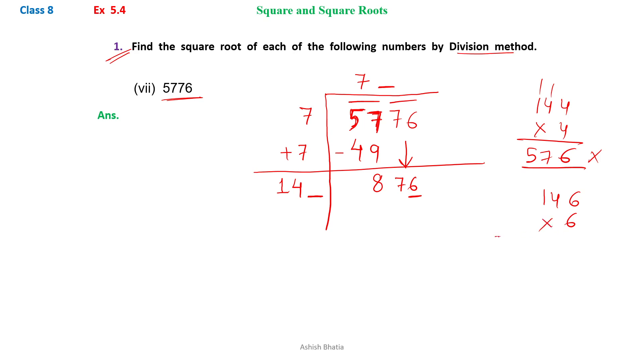Because 6 sixes are 36, so we can get a number. 6 fours are 24 and 3, 27. 2 carry over, 6 sixes are 6 and 2, 8. So we got the required number 876. So we will just write 6 here and 6 here, and after multiplication we get 876.